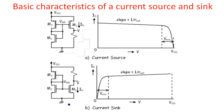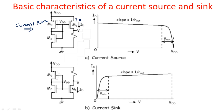Now let us see the basic characteristics of this current source and sink. There are two branches to create this constant current source using a PMOS or NMOS transistor. The first branch is the current source. The current ID passes from the PMOS transistor M1, which is the main sourcing circuit transistor.